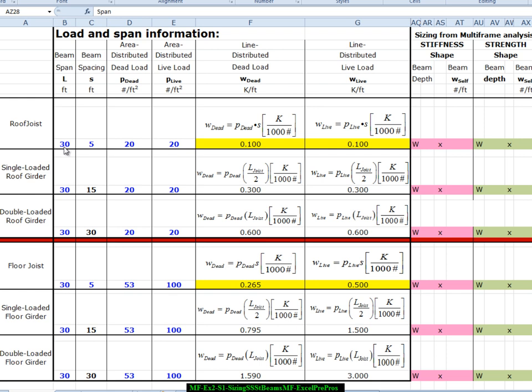Everything in blue in the spreadsheet, it works like a template. So anything that's blue, you can go in and change. In other words, you can recycle this template and use it for lots of different spans and proportions, lots of different grid spacings for the columns. In our case, we're going to do a 30 by 30 column grid. So the roof joist length is 30 feet. The single loaded roof girder length is 30 feet. And the double loaded roof girder length is 30 feet. And the same is true for the floor. Now, in this problem, you're being told to use a spacing of 5 feet for the joist for both the roof and the floor. You can, of course, change that to anything you want to, but for this exercise, that's the way we're going to do it.